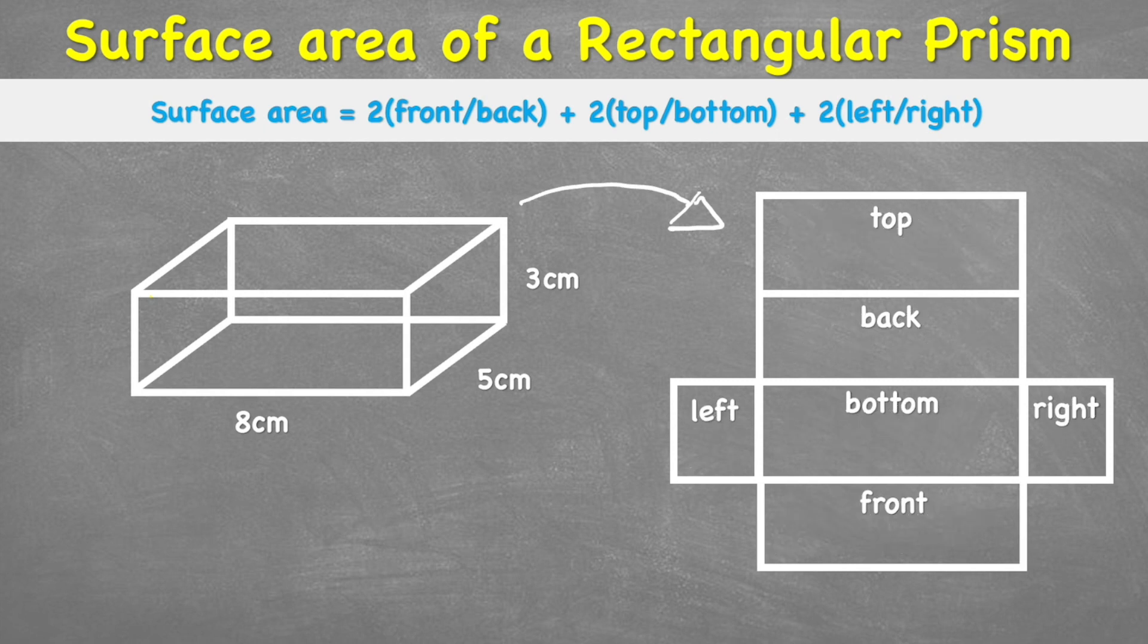But fortunately there is a little trick or a formula to help us because we can see that the surface area equals two front or backs, because we can see that our front and our back is going to be exactly the same. So we only have to make one measurement and then we can multiply it by two.